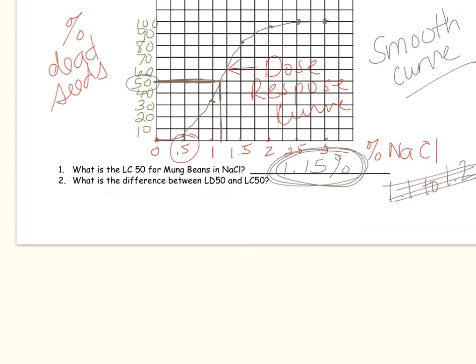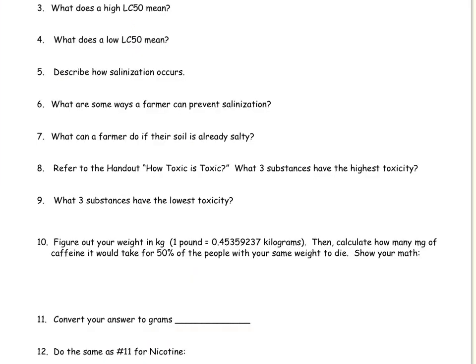You also need to answer question number two: what is the difference between LD50 and LC50? I went over that at the beginning of the instruction. Number three, what does a high LC50 mean? If the number is high, it takes a lot of it to kill you. It means it has low toxicity because it takes a lot to kill you. The opposite, a low LC50 means that tiny amounts will kill you. That means it's highly toxic if low amounts will kill you.